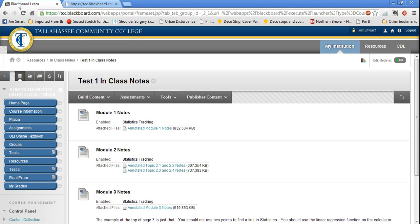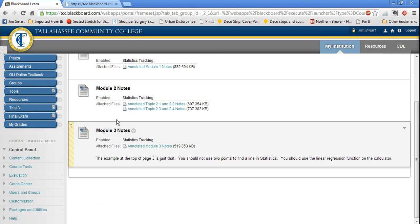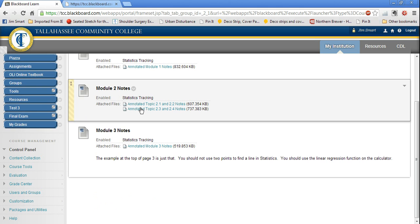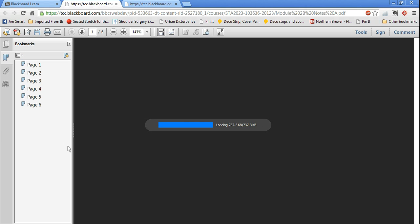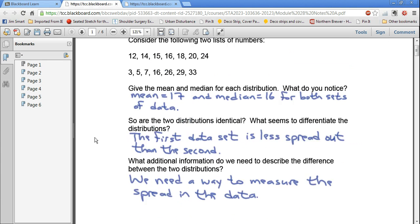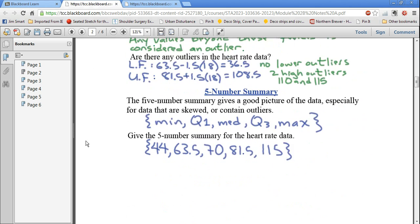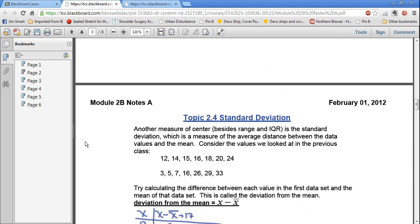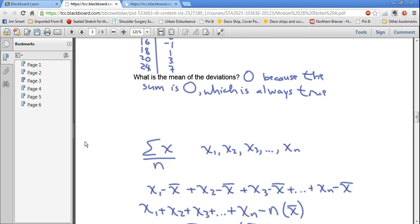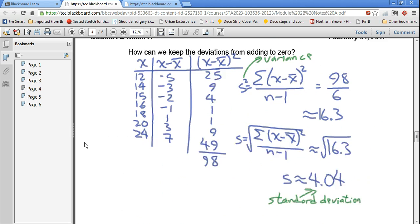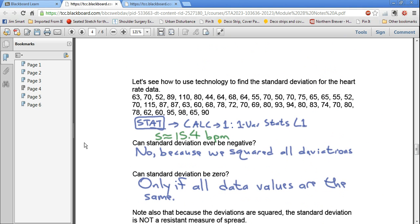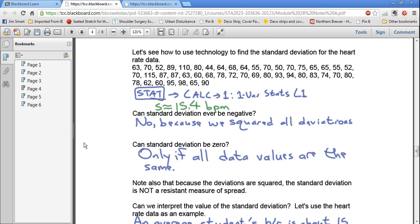So we're going to go back to the main Blackboard page with the notes, and we're going to click on the Annotated Topic 2.3 and 2.4 notes, and we're going to scroll down to the page with this so you can see follow along in the notes as well as with the calculator. So it's down here a little ways. It's quite a ways down, it appears.